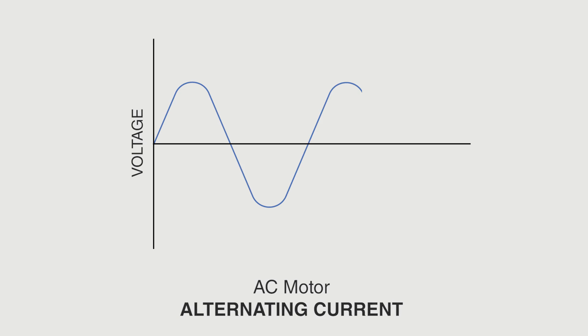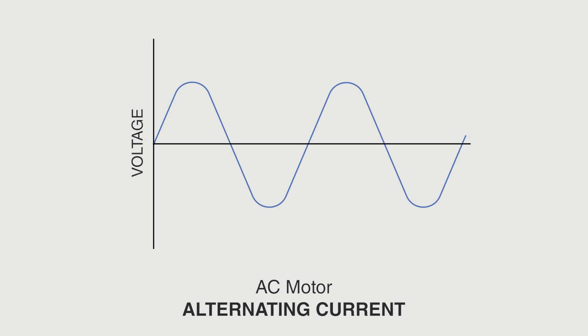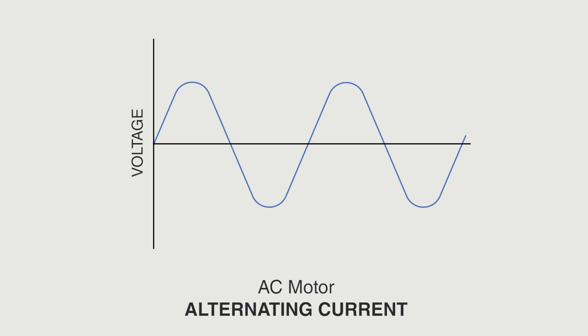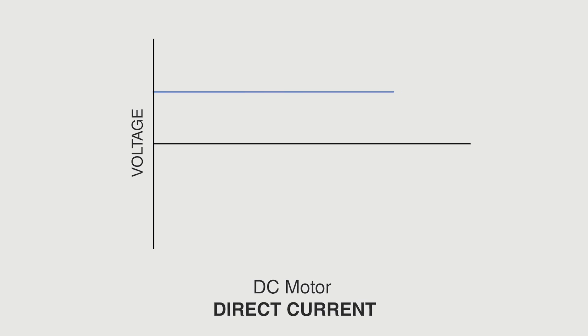There are two types of motors: AC and DC. The AC motor works with alternating current, that is to say, the current works in a range of voltages. The DC motor, on the other hand, includes a transformer in its motor that converts alternating current into direct current, leaving a voltage of a single value.